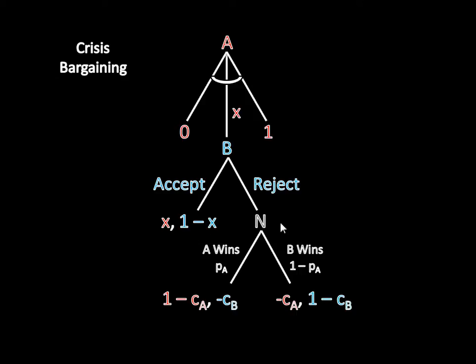And if B rejects, we have this actor here called N, which represents nature, choosing randomly whether A wins the war or B wins the war. And if A wins, that occurs with probability pA, then A gets the entire good worth one, but pays its cost of war cA. And B just gets nothing, but still has to pay its cost cB. On the other side, if B wins, then that happens with probability one minus pA, then A doesn't get anything, but pays its cost negative cA. And B, meanwhile, gets everything, the entire good worth one, but still has to pay its cost cB.